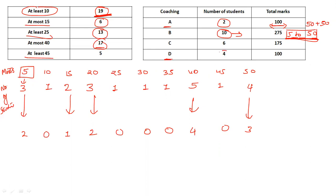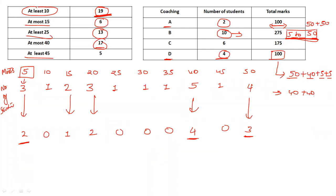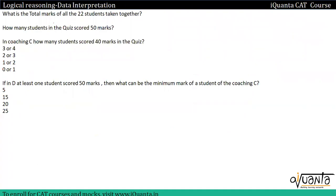For coaching D: we have four students and the total marks should be one hundred. One possible way: if we take fifty, then with fifty we can take forty plus five plus five — that is ninety plus five plus five. Another possible way: forty plus forty is eighty, then we need twenty more with four students, so fifteen plus five is possible. These are the possible combinations for coaching D.